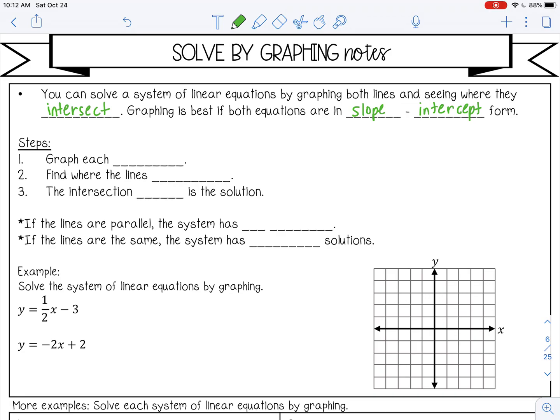Step one: graph each equation. Step two: find where the lines intersect. Step three: the intersection point is the solution. A couple of notes: if the lines are parallel, the system has no solution because they will never meet. If the lines are the same, so if you graph the lines and they turn out to be exactly the same line, then the system has all real solutions.